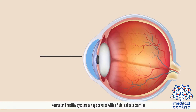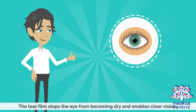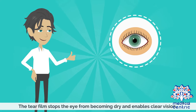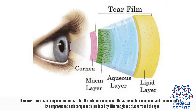Normal and healthy eyes are always covered with a fluid called a tear film. The tear film stops the eye from becoming dry and enables clear vision. There exist three main components in the tear film: the outer oily component, the watery middle component, and the inner mucus-like component. Each component is produced by different glands that surround the eyes.